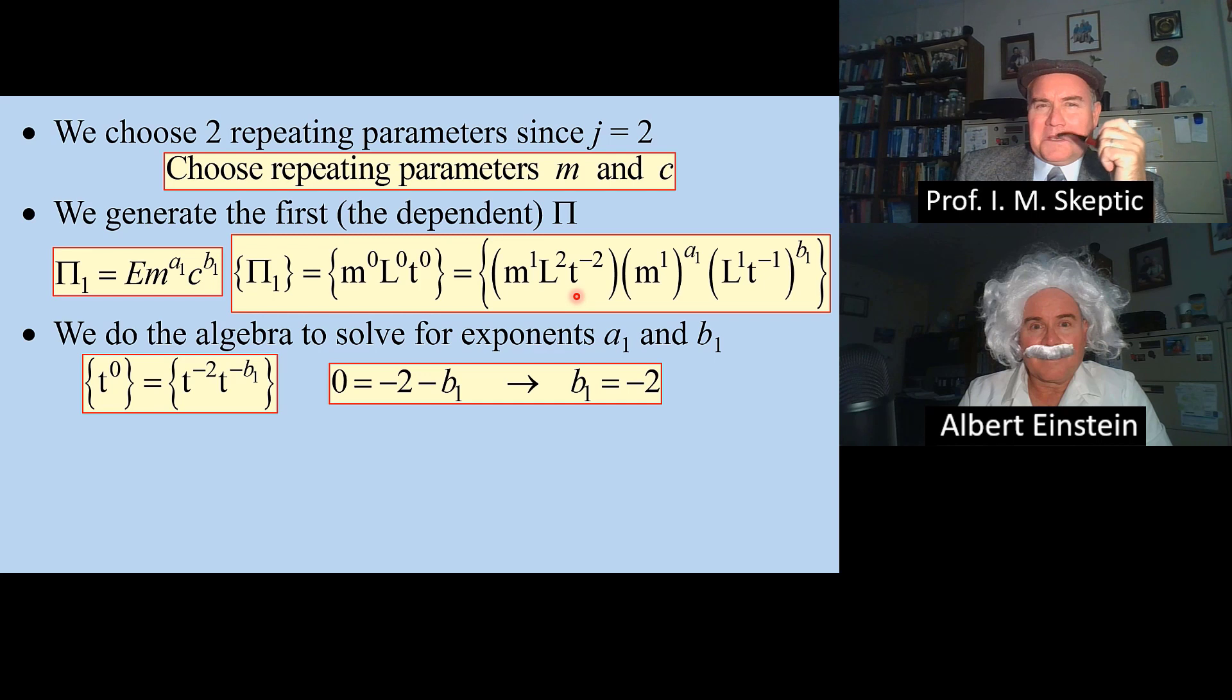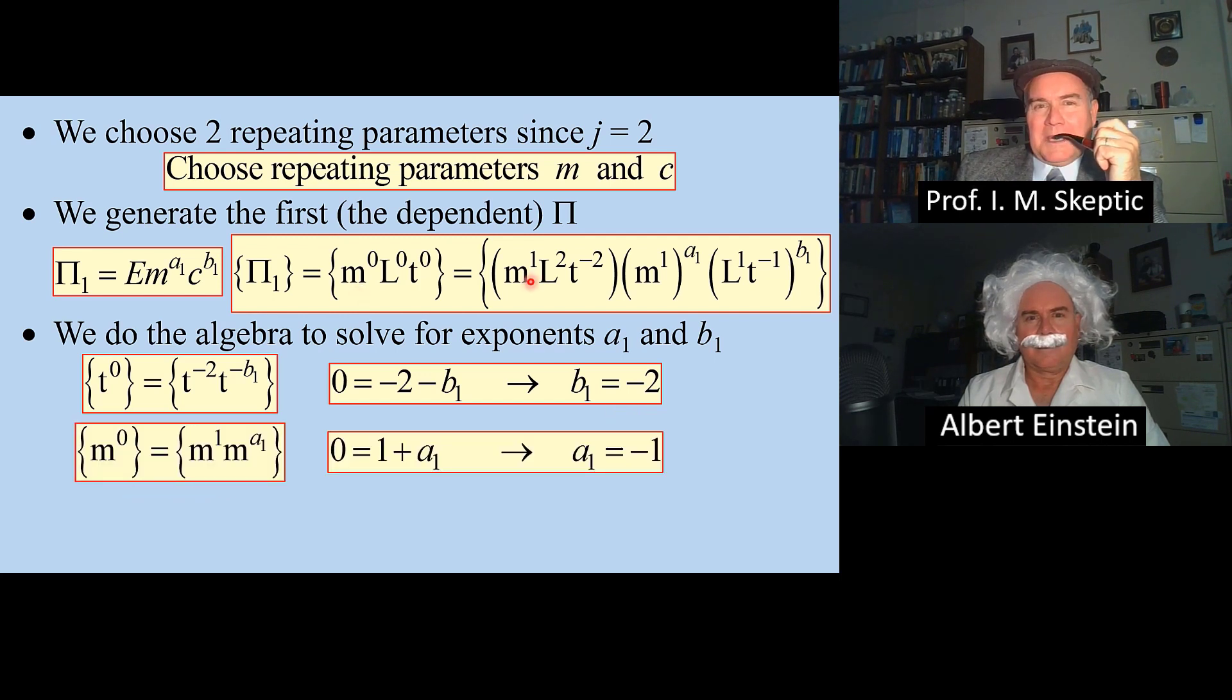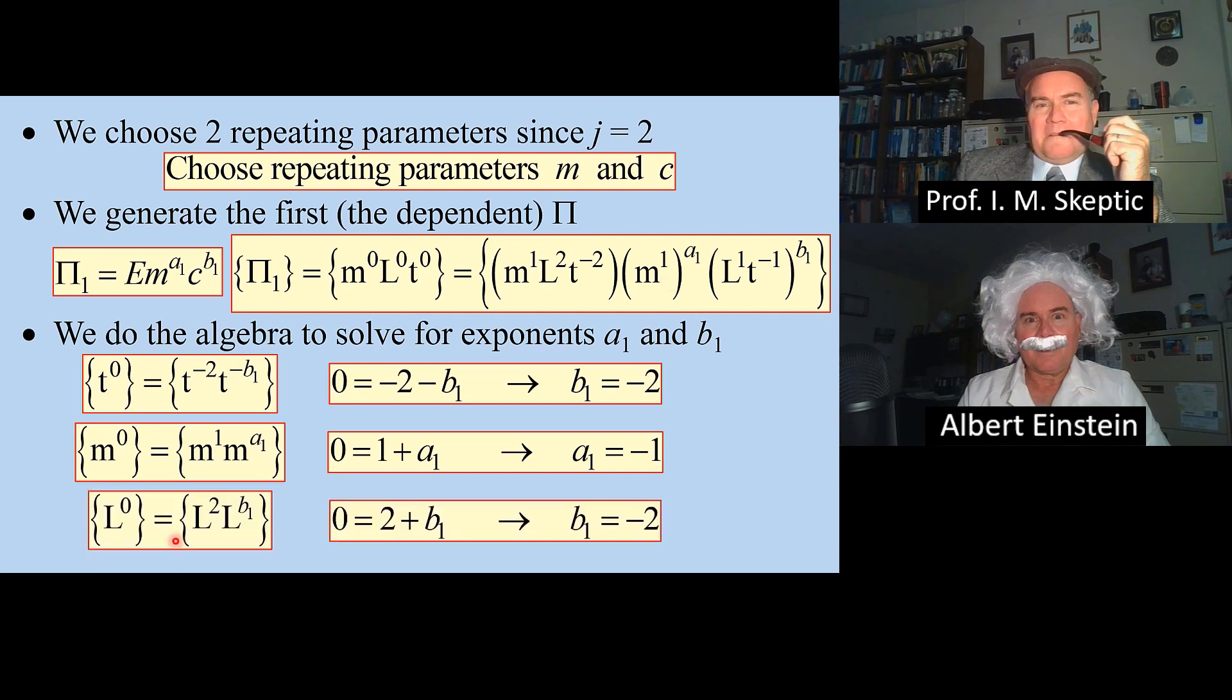t to the 0 equals t to the negative 2 times t to the negative b1. We see that here. And it's easy to solve for the exponent b1. b1 is negative 2. We do the same for mass. 0 equals 1 plus a1. a1 has to equal negative 1. Finally, for L, we find b1 is negative 2.